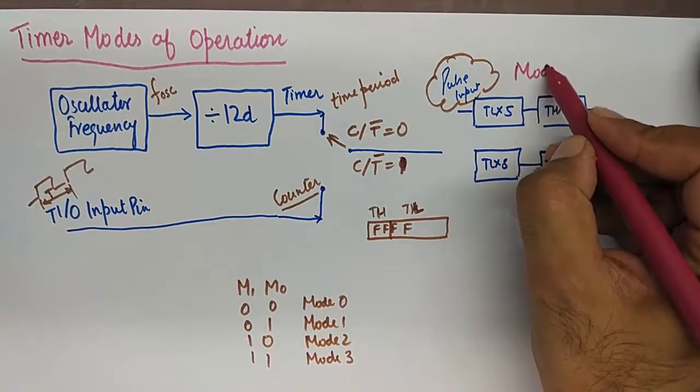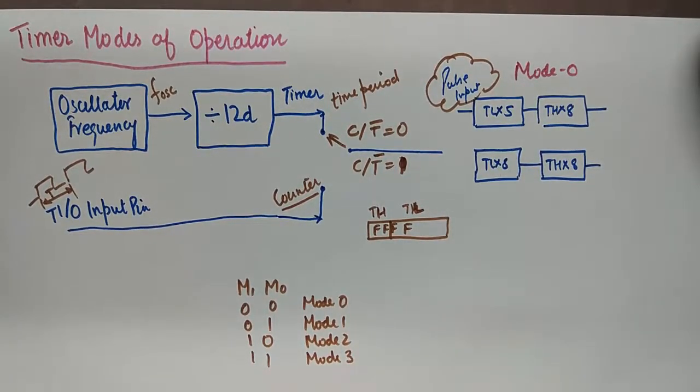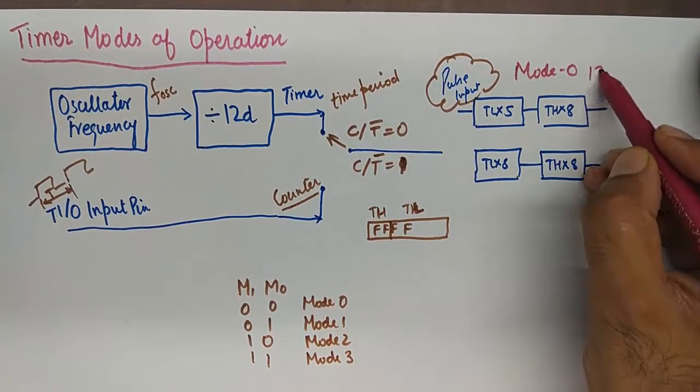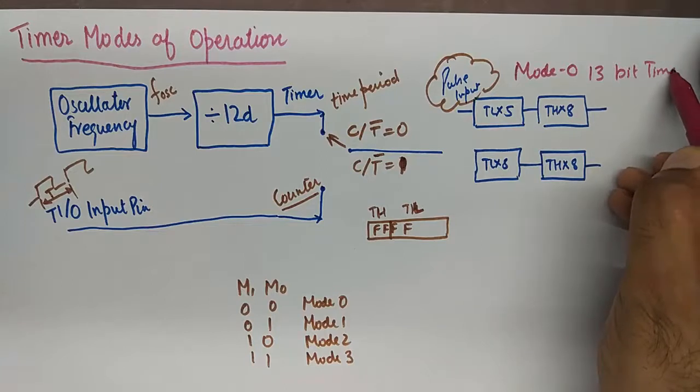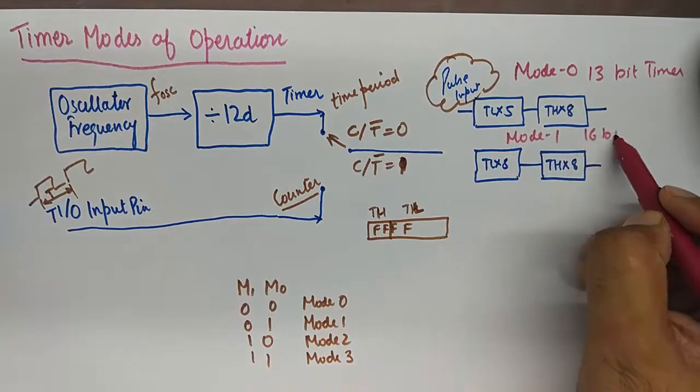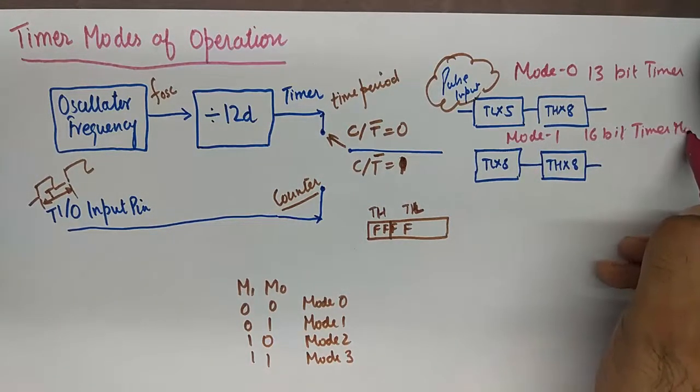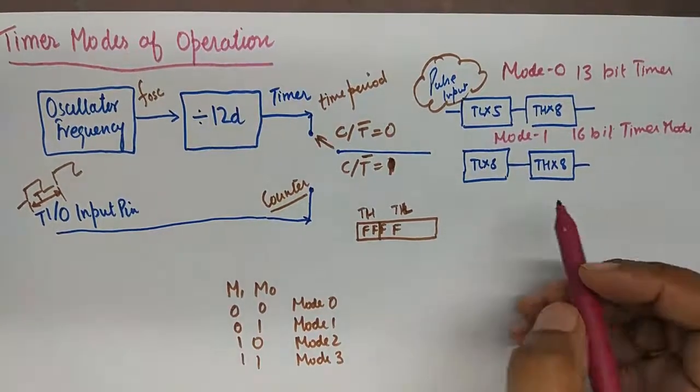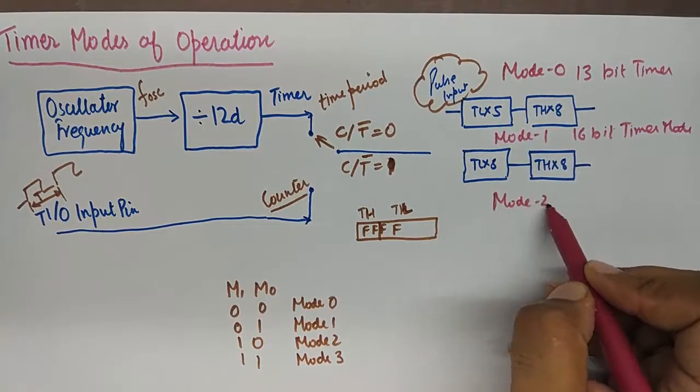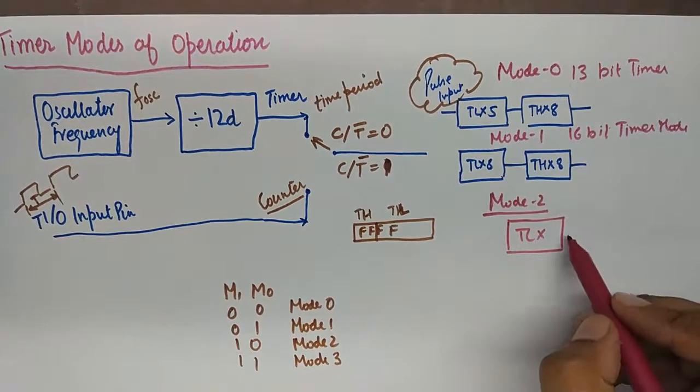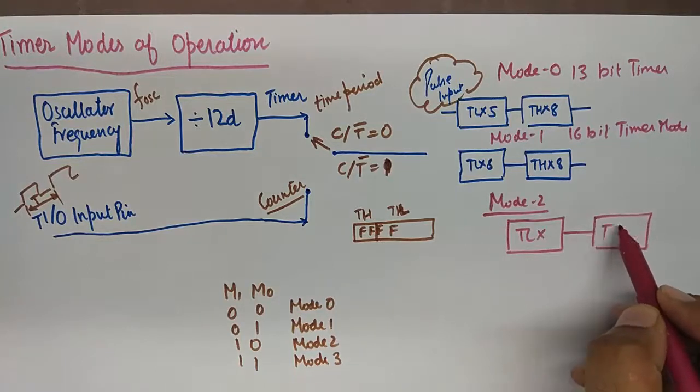This is mode 0, and it is popularly known as 13-bit timer. Mode 1 is the simplest, which is known as 16-bit timer mode. And we have mode 2, which is 8-bit auto reload mode.